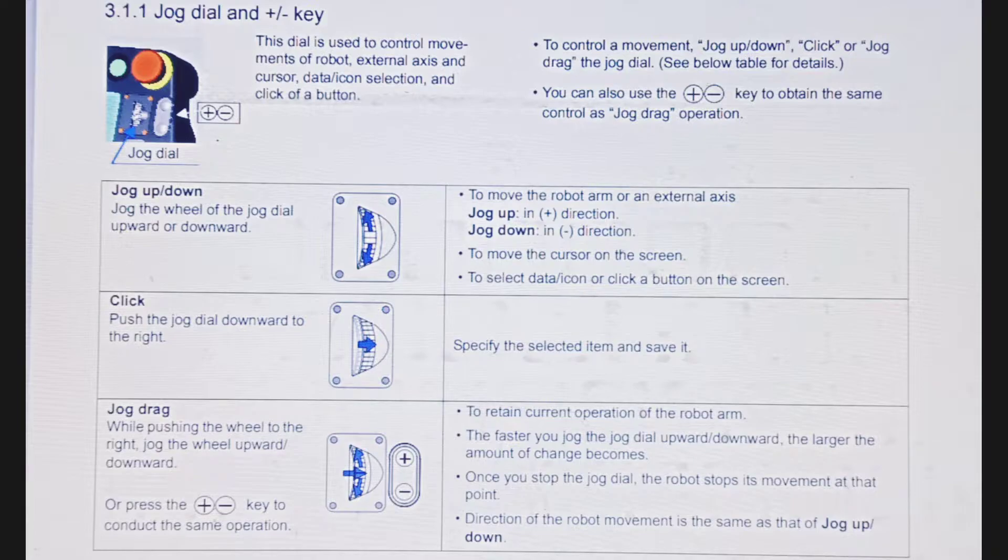The second column is click. Push the jog dial downward to the right to specify the selected item and save it.